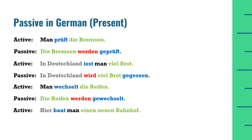Active: 'Man baut einen neuen Bahnhof' — banda ek naya railway station banata hai. Is jumle ko passive mein convert karna hai. Active mein 'einen neuen Bahnhof' accusative mein hai — indefinite article 'einen' aur adjective ending bhi accusative ki hai. Passive mein ye subject ban jayega, to nominative indefinite article 'ein' aur nominative adjective ending use karenge: 'Ein neuer Bahnhof wird gebaut' — yahan par ek naya station banaya jata hai.